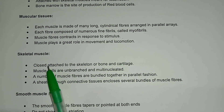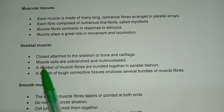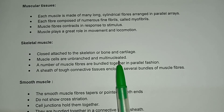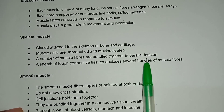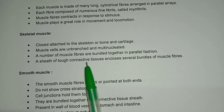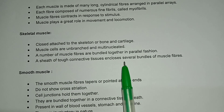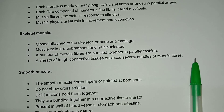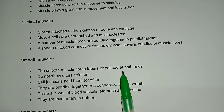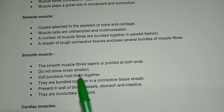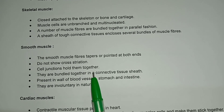Skeletal muscle is attached to the skeleton — bones and cartilage. Muscle cells are unbranched and multi-nucleated. A number of muscle fibers are bundled together in parallel fashion. A sheath of tough connective tissue encloses several bundles of muscle fiber.